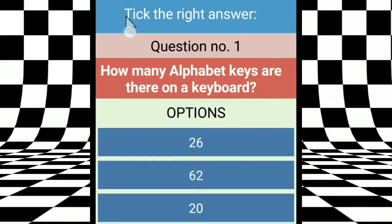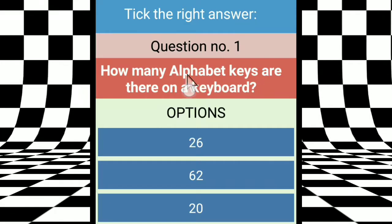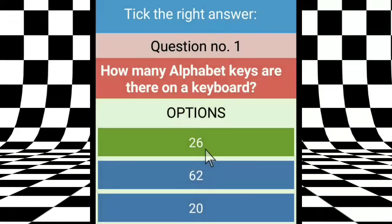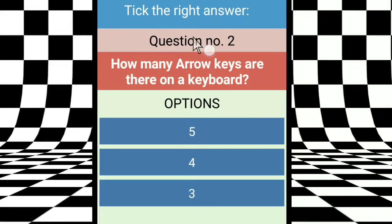Now let's take the right answers. Question one: how many alphabet keys are there on a keyboard? There are 26 alphabets, A to Z, so there are 26 alphabet keys on the keyboard. The right answer is 26.